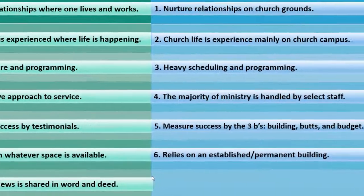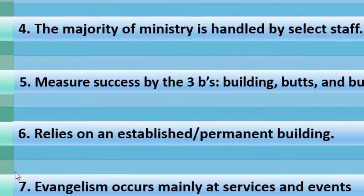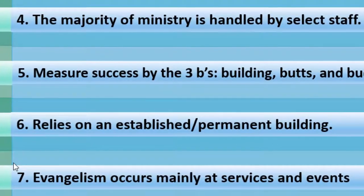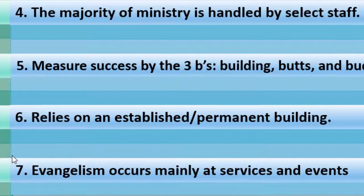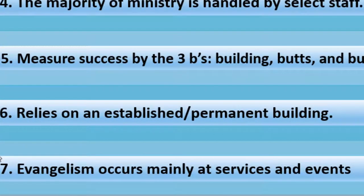Number seven for attractional: evangelism occurs mainly at services and events. Evangelism occurs mainly from the pulpit where, after a message is given by the pastor and while worship leaders perform their last song, hearers are invited to go to the altar and give their life to Christ.